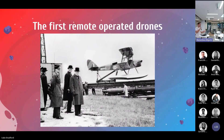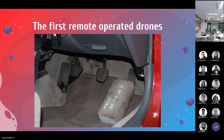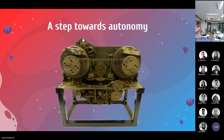One of the first recordings of a remote-operated drone was in the 1930s. It was an airplane with a radio receiver strapped in to control it. It wasn't a very smart or logical system — a radio wave gets received and it does something; for example, a signal would throttle the engine. As we progressed, this was the first step towards autonomy.